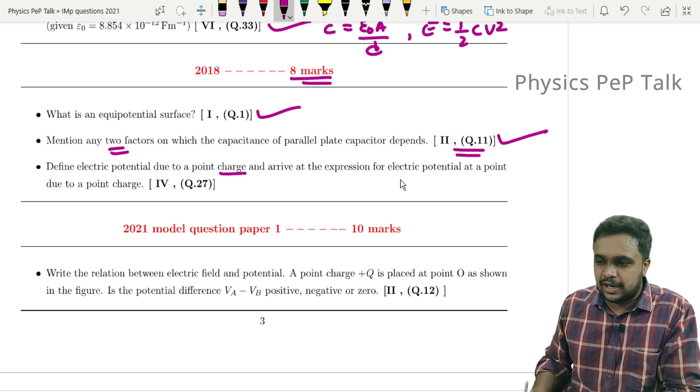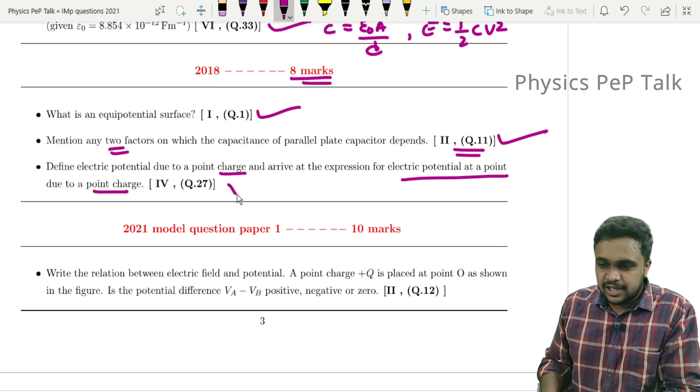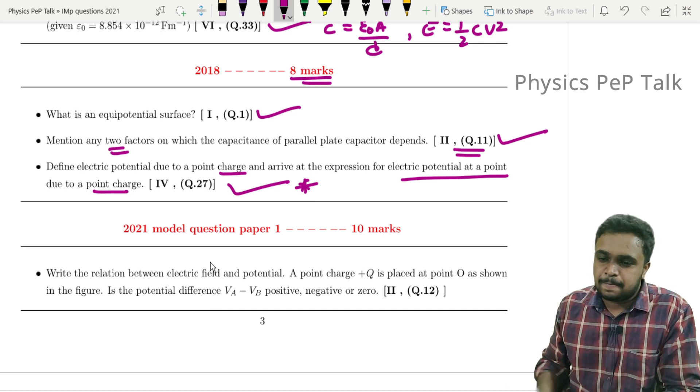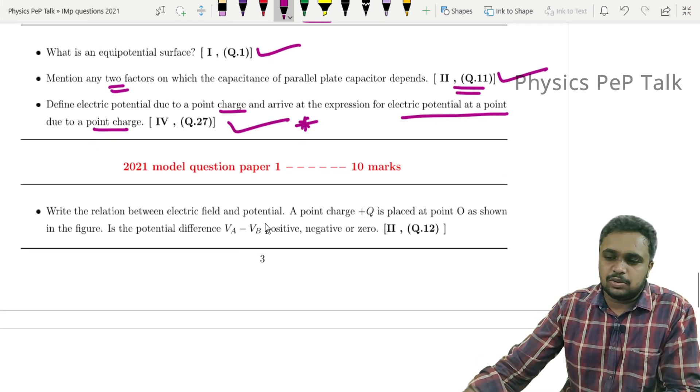Define electric potential due to a point charge and derive the expression for electric potential at a point due to a point charge. This is the first derivation in the chapter, so this is also very important.